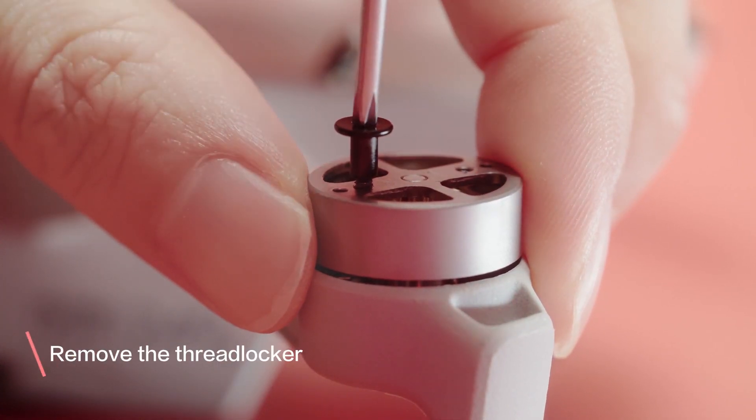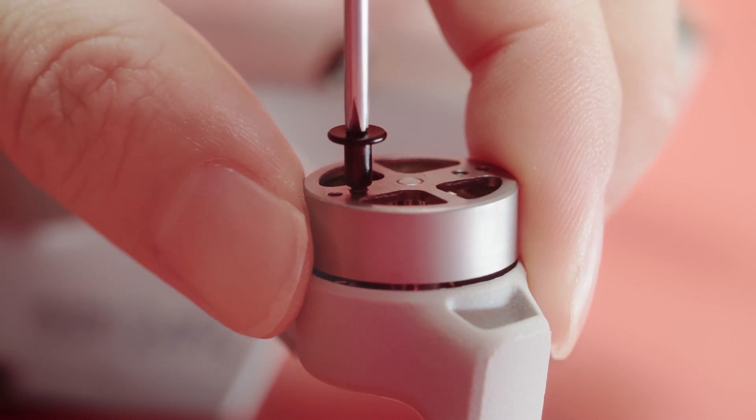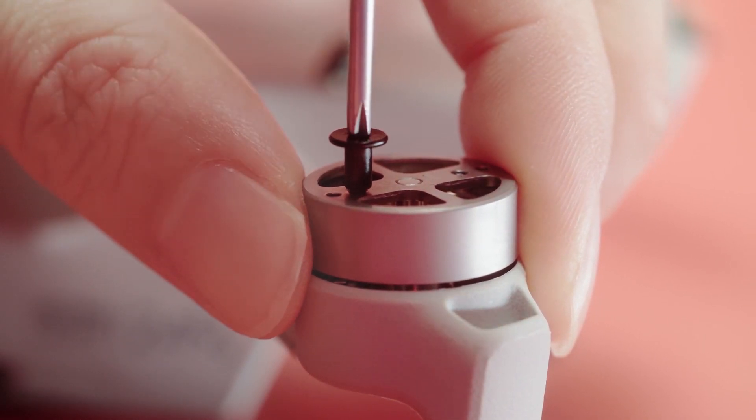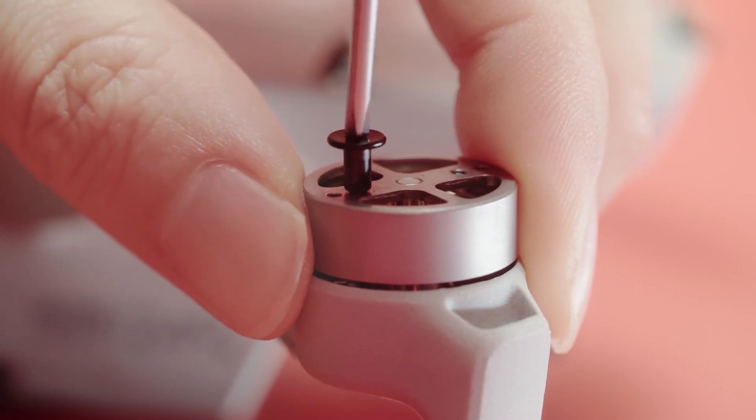Before attaching the new propellers, remove the blue thread locker in the screw hole. You can screw the old screws in and out multiple times to clean the screw hole.